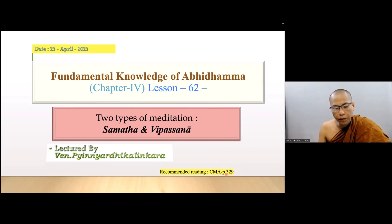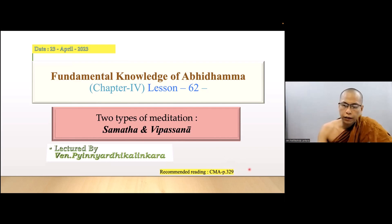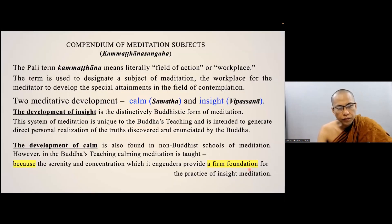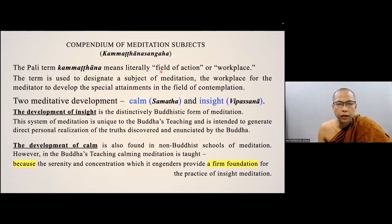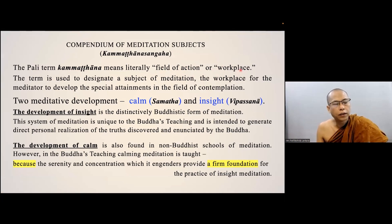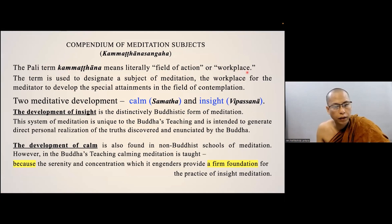The page number is 329. You can start from the Comprehensive Manual of Abhidhamma, page 329, to study chapter nine. The first term introduced here is Kamathana. Kamathana — if we translate it, it means 'field of action' or literally 'work place,' where the work is done. Because Kama is work and Thana is place — work place.